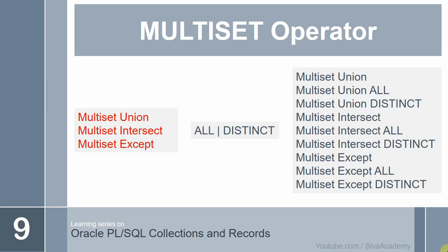Hello friends, welcome to Oracle Collection video series. In the previous set of videos, we have learnt about what is a collection and what are the different types of collection, then we have learnt about record type, vArray, nested table and associative array. As a continuation of that, in this video we will learn about what is multiset operator.